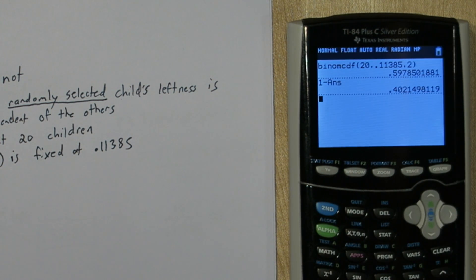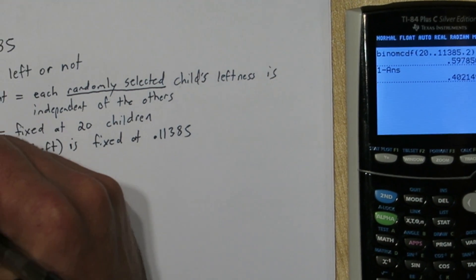And we'll have the probability of 3, 4, 5, 6, 7, 8 all the way up to 20 children being left handed. So there's our answer.